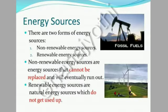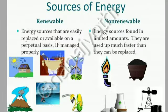There are two forms of energy sources: non-renewable energy sources and renewable energy sources. Non-renewable energy sources are energy sources that cannot be replaced and will eventually run out. Renewable energy sources are natural energy sources which do not get used up. Renewable sources are easily replaced and available on a perpetual basis if managed properly, while non-renewable sources are found in limited amounts and are used up much faster than they can be replaced.